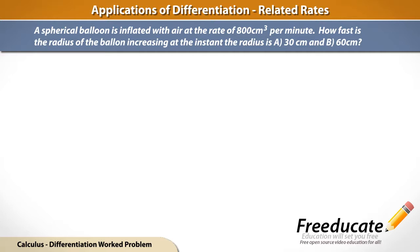But first off, I'm just going to read the problem. So we have a spherical balloon that's being inflated with air at a rate of 800 cubic centimeters per minute. So we want to know how fast is the radius of this balloon increasing at the instant that the radius is A, 30 centimeters, and B, 60 centimeters.